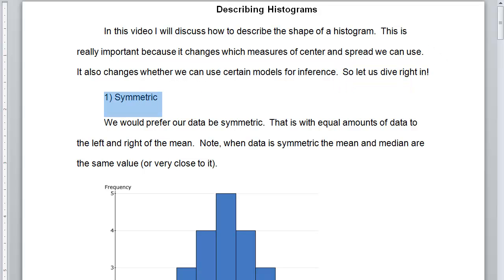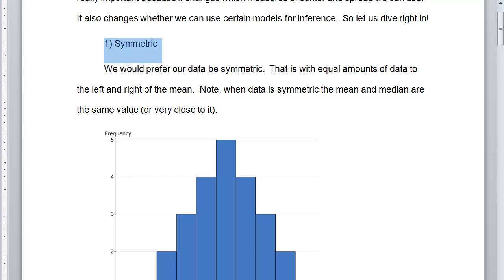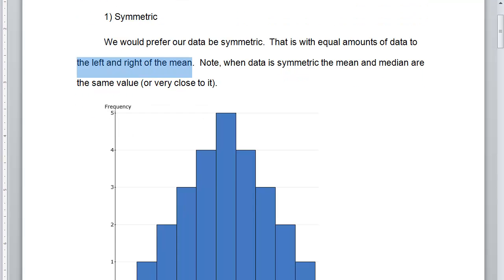The first thing you want to look for is, is it symmetric? We would really prefer our data to be symmetric. That is, with equal amounts of data to the left and the right of the mean.